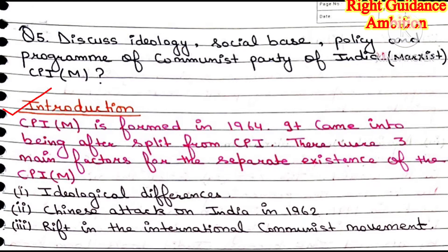First of all, let's start with our introduction. The CPIM party was made in 1964. This party split from CPI. As I told you in the previous video, CPI was made in 1924. There were some members in CPI whose ideological differences arose. Therefore, they formed their own party in 1964, named CPIM. Now, there are three main factors responsible for why they made CPIM. First, ideological differences — conflicts over principles and how to run the party.